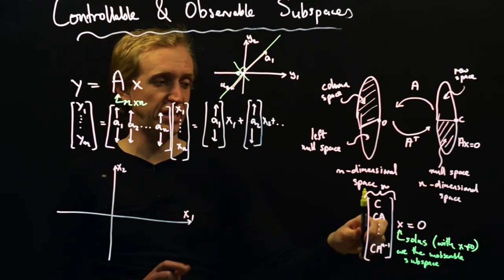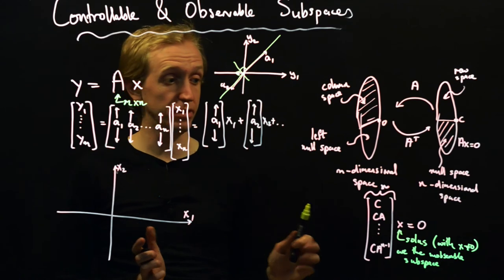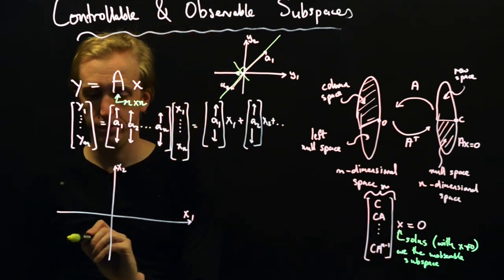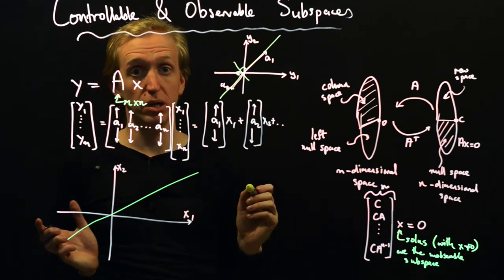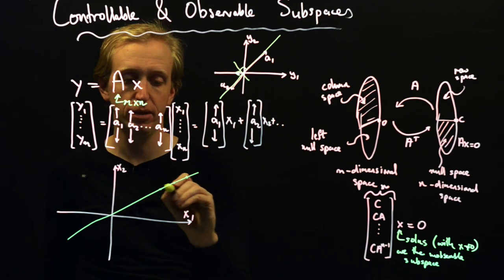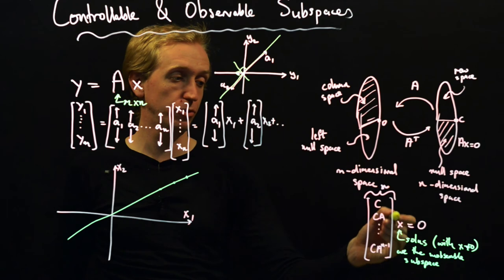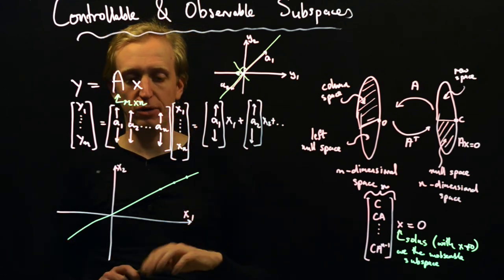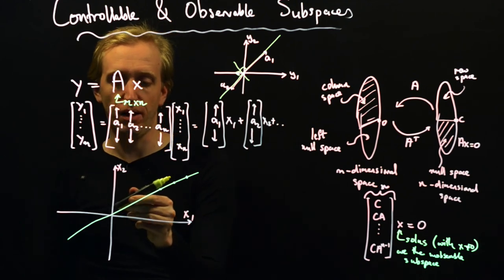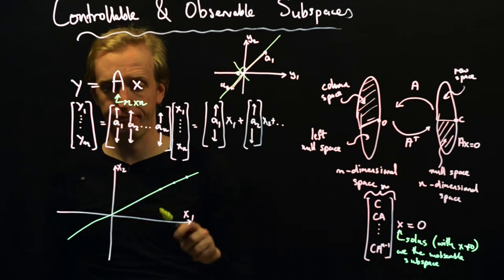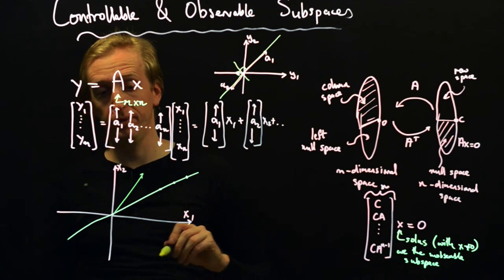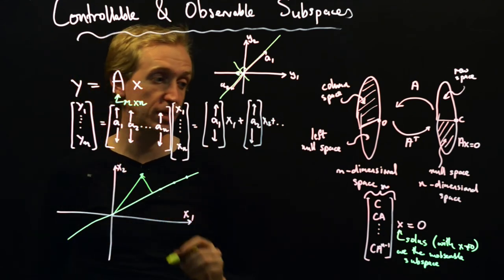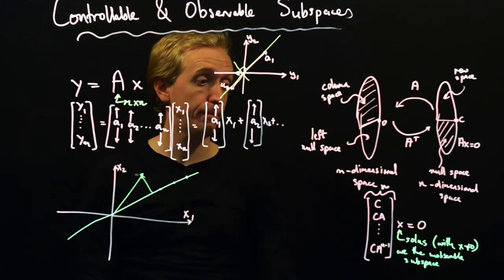Say there are only two columns and they're not independent — so n is 2 but rank is 1. That means there's going to be a one-dimensional subspace, just a line, that we can't observe. Given any initial condition along this line, each point on this line corresponds to a solution to this equation — these correspond to initial conditions that we can't observe. More generally, we can't observe the part of an initial condition pointing in this direction. Given a general initial condition, we would be able to observe part of it, but not the part in the direction of the unobservable subspace.